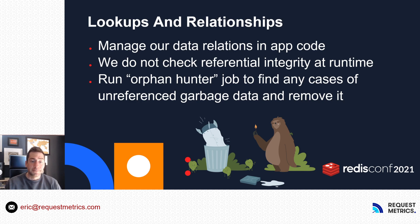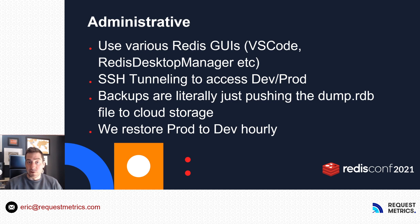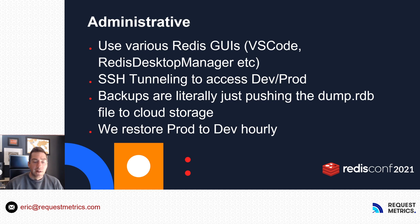A few administrative things to touch on. We use various Redis GUIs to look inside our Redis database — VS Code has some nice extensions, we use Redis Desktop Manager, and we have some bespoke admin pages to see which customers take up the most size. To access our dev and prod environments, we use SSH tunneling. For backups — when you've got durability limitations like Redis does, backups are very important. We take a backup every hour; it's literally just the dump RDB file, and we store it in cloud storage — actually in two different clouds just in case. It's the only thing we use the cloud for. We restore our prod backups to dev every hour, which is nice from a dev perspective because we've always got fresh data.